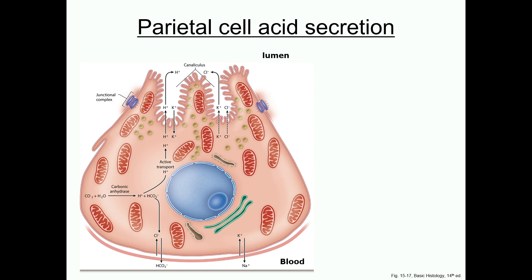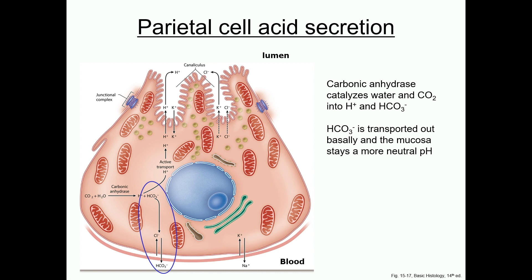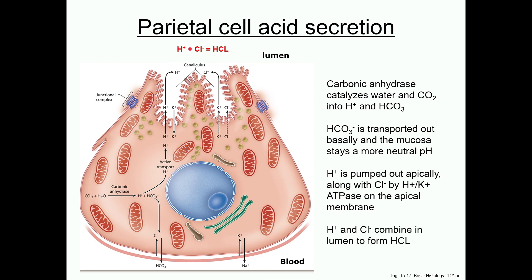Parietal cells play several crucial roles in digestion, so we'll spend a few minutes discussing their functions, in particular the formation of acid. In the cell, carbonic anhydrase catalyzes water and carbon dioxide into hydrogen ions and bicarbonate. The bicarbonate is then transported out basally, which helps keep the stomach mucosa a more neutral pH. Parietal cells have a hydrogen-potassium ATPase on their luminal side, which pumps hydrogen ions into the lumen along with chloride through chloride channels. In the lumen, the hydrogen and chloride ions combine to form hydrochloric acid.